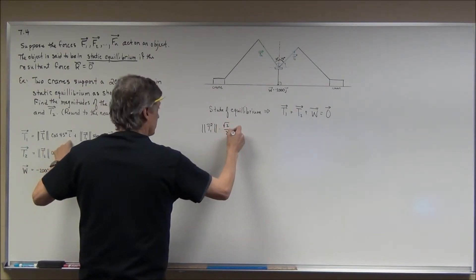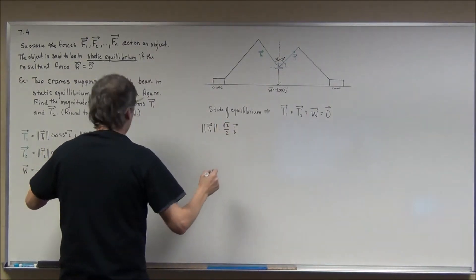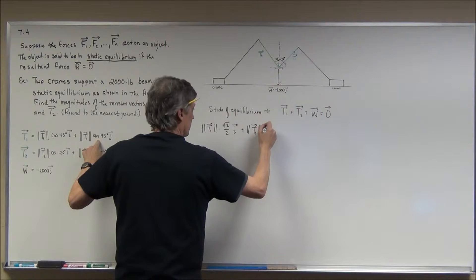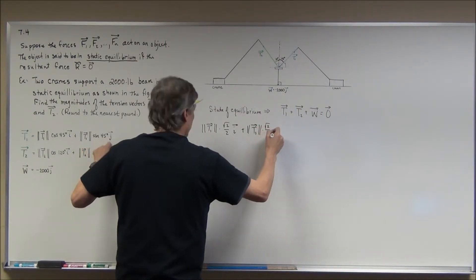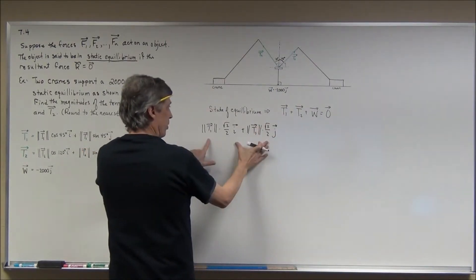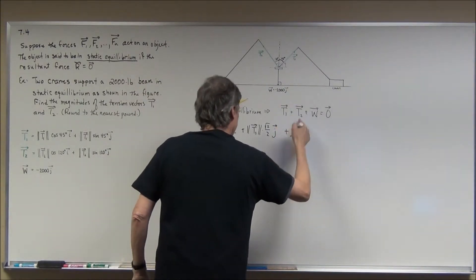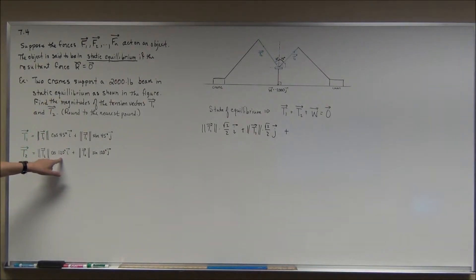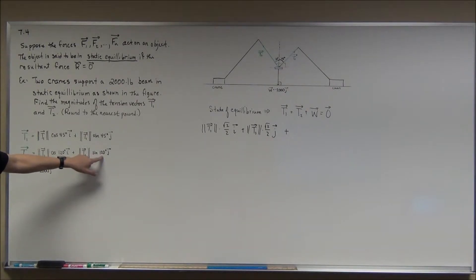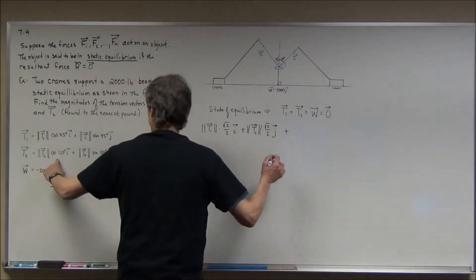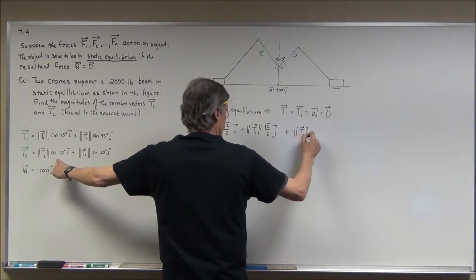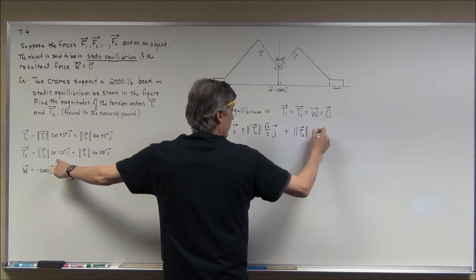Plus T sub 1's magnitude also times the square root of 2 over 2 times vector j. All that plus T sub 2 — I'm going to plug in the values for the cosine of 120. The cosine of 120 is negative one half, the sine of 120 is the square root of 3 over 2. So I have the magnitude of T sub 2 times negative one half times vector i.